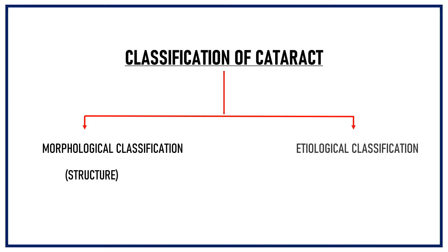Second is the etiological classification. Etiology means the cause of a disease, so etiological classification is based on the different causes that may lead to cataract formation, and we will cover that classification in our next video. So let's start with the morphological classification of cataract.